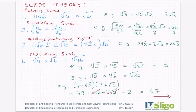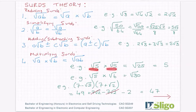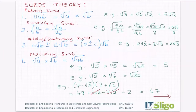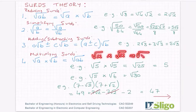Multiplying surds: root A times root B is the square root of AB. The special case is when you are multiplying the same number by itself. So root 5 by root 5 is the square root of 25, which is 5. If I had root 6 by root 6, it would be the square root of 36, which is 6. More generally, root x times root x is the square root of x squared, which equals x. So if you're multiplying a surd by itself, you will always end up getting the number without the square root sign.